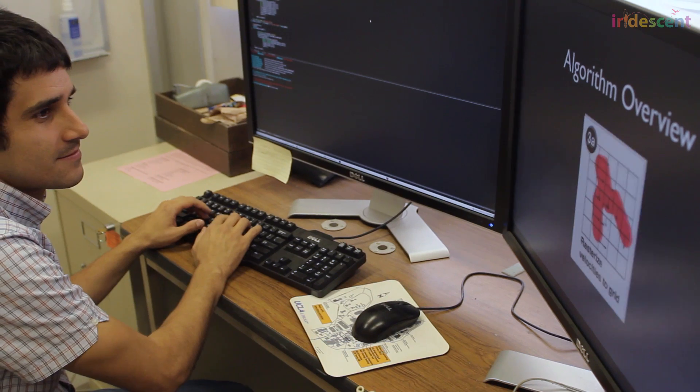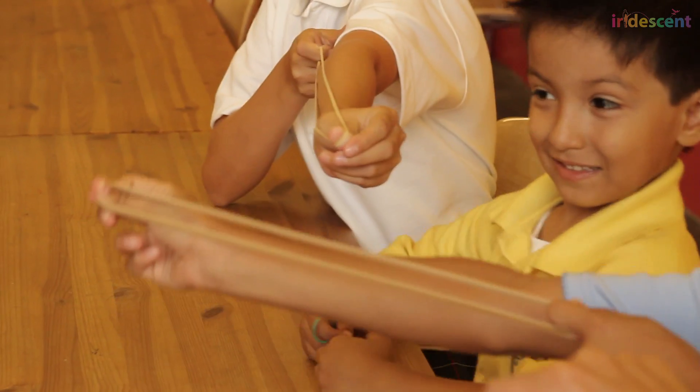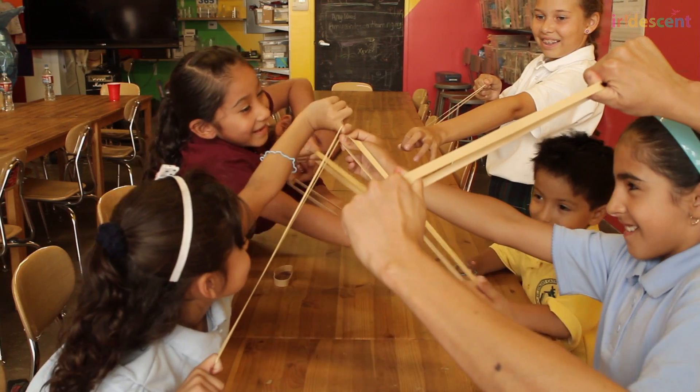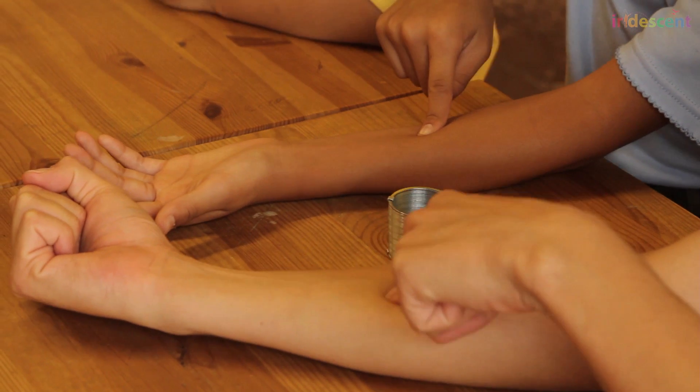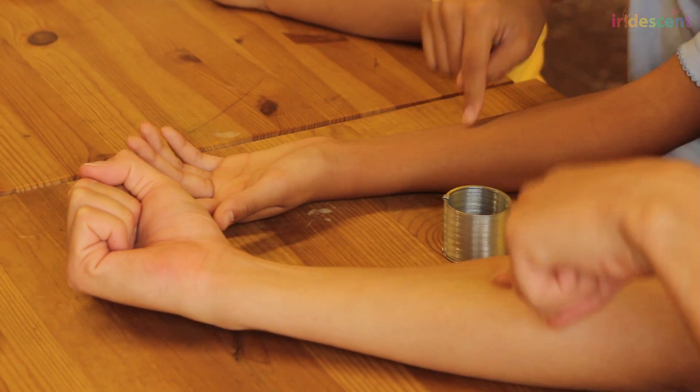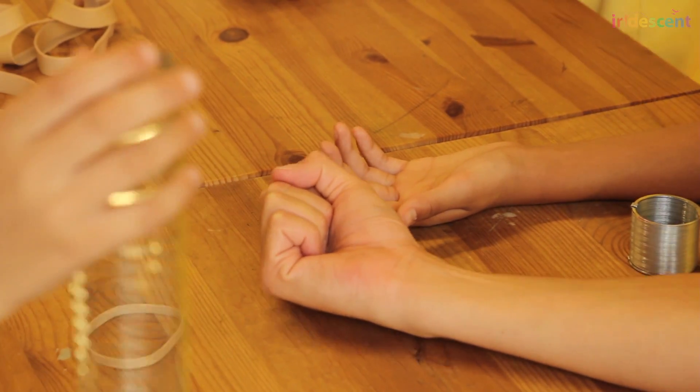He explains that the hardest objects to simulate are those that are elastic, objects that are squishy and change shapes, but don't break very often. Try to press on an area of your arm, for example. You will notice that it bounces back to the original shape.